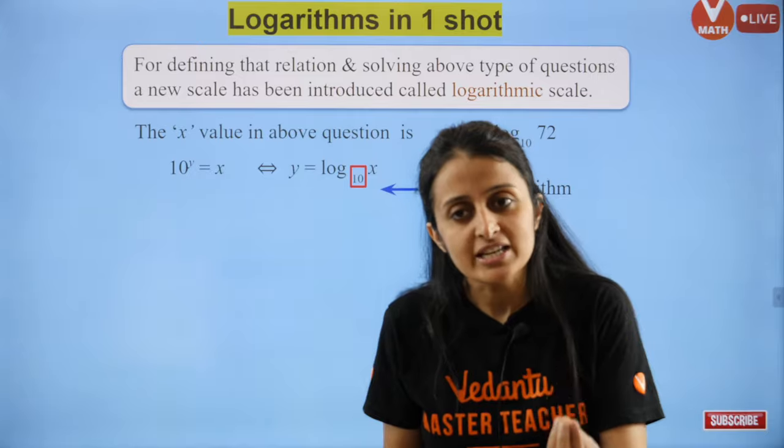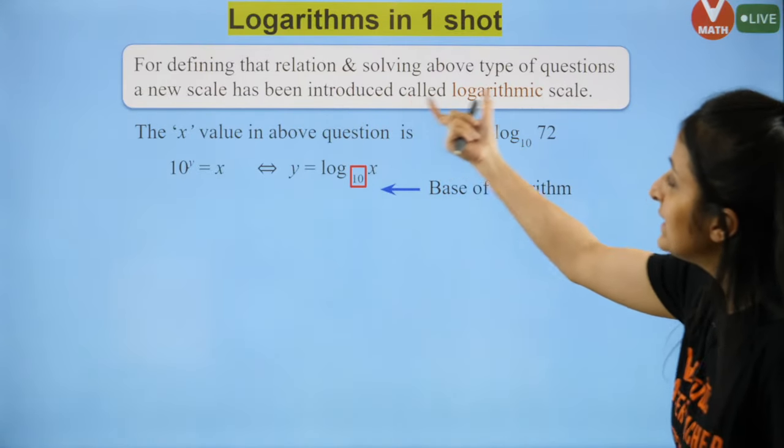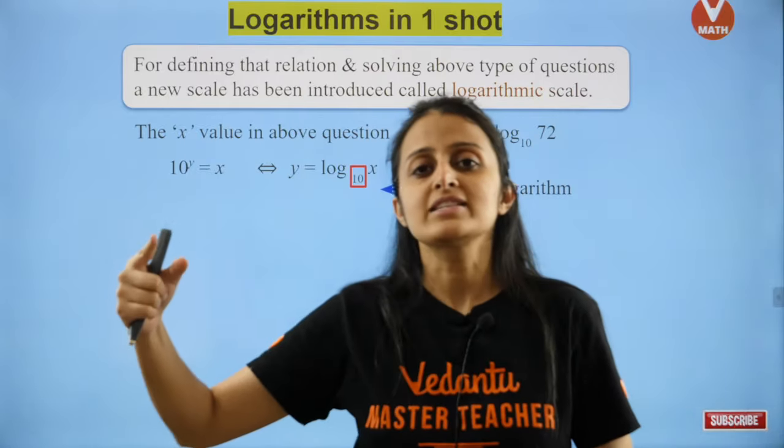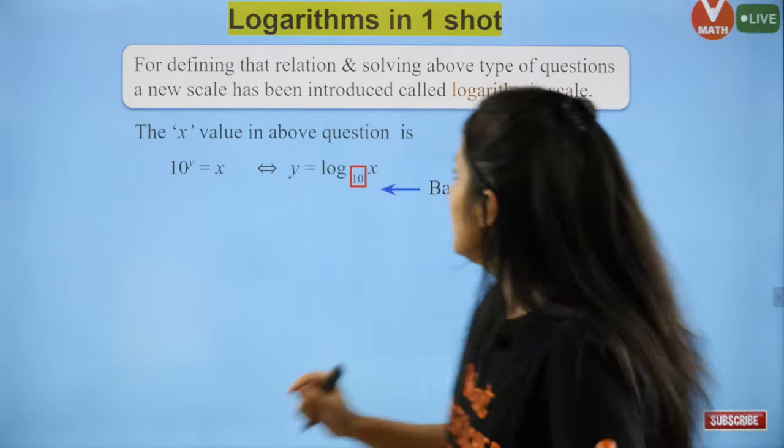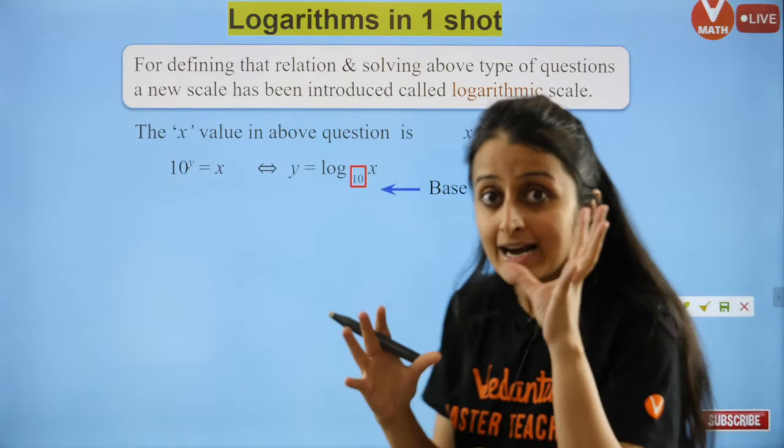If I ask you to find 10 raised to power x equals 72, what is the value of x? Such questions and many more we were not able to find directly. That is the reason John Napier introduced something as beautiful as logs. For this we need a new scale called logarithmic scale.